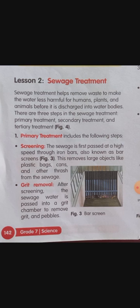In primary treatment, there are three different steps: first is screening, second is grit removal, and third is sedimentation. Screening is the process in which the sewage is first passed at high speed through iron bars, also known as screens. This removes large objects like plastic bags, cans, and other trash from the sewage.